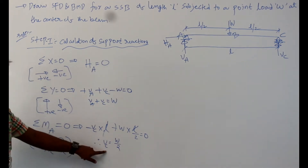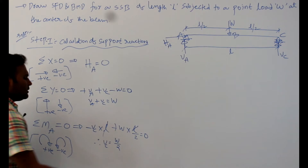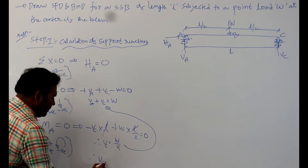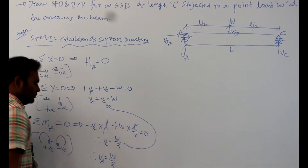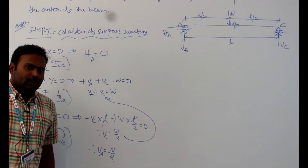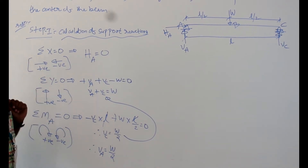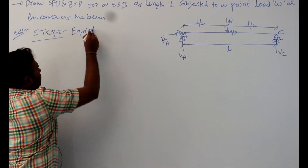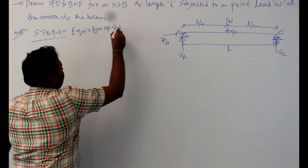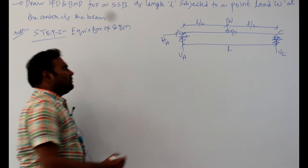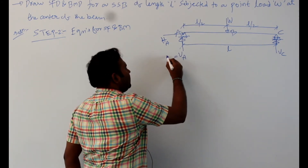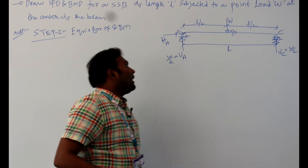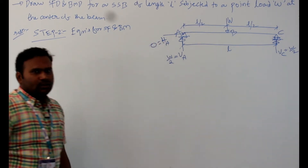Substituting VC = W/2 back into VA + VC = W, we get VA = W/2. Therefore, both support reactions are W/2 each. HA = 0, VA = W/2, VC = W/2. This completes Step 1.